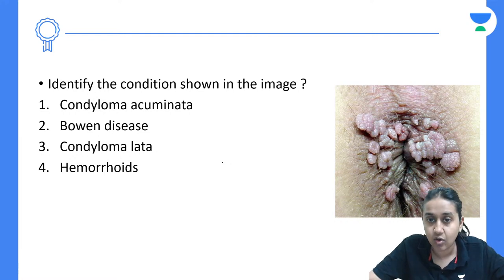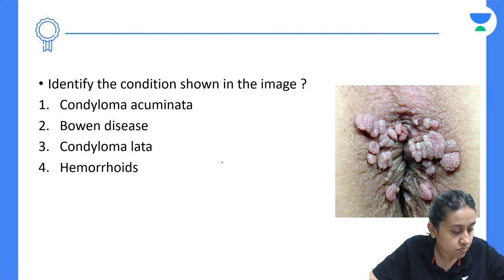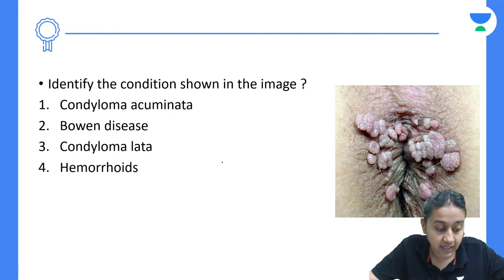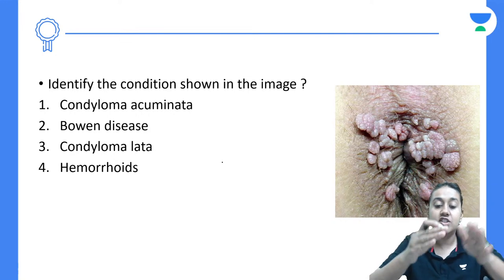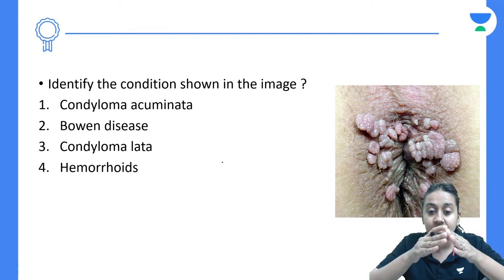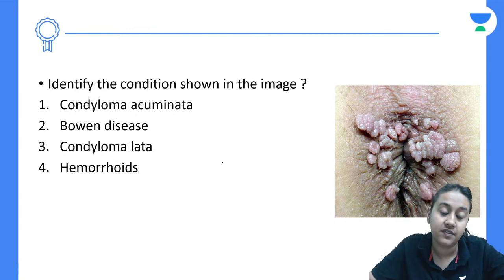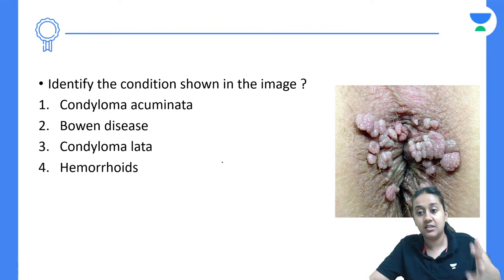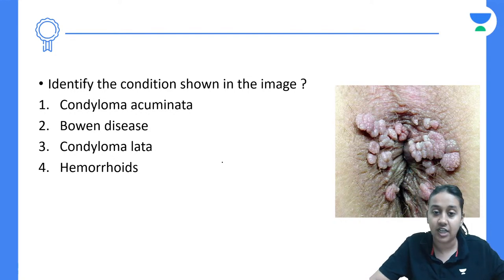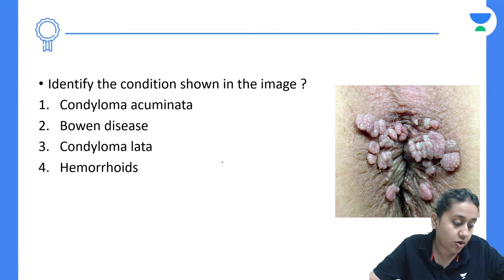The tent sign — tenting of the nail — is the thinning of the nail seen in lichen planus patients. It is in fact considered the more common nail feature compared to pterygium.